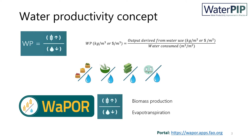Improving water productivity focuses on both parts of the equation: increasing production in the form of biomass production or yield, or by reducing the water used or consumed through evapotranspiration.